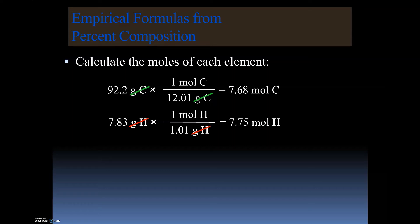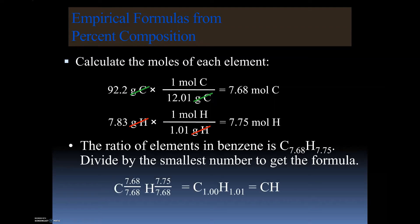The next step is dividing by the smallest number. In this case it's 7.68. We divide each mole value by 7.68, getting a value of 1 for carbon and 1.01 for hydrogen. Since 1.01 is close enough to a whole number, it rounds to 1.